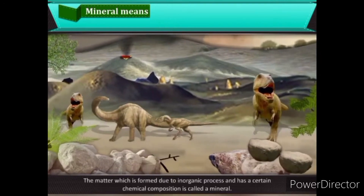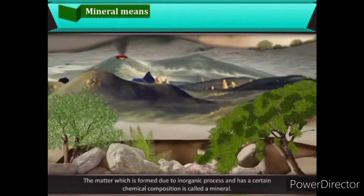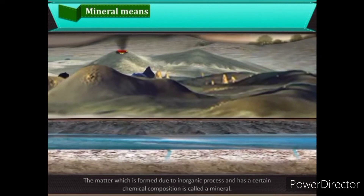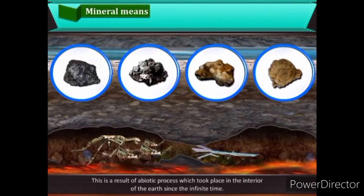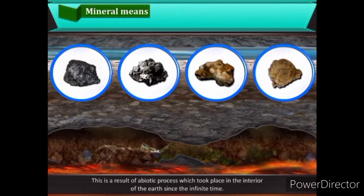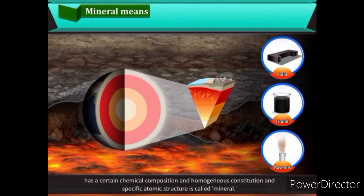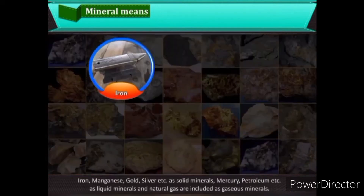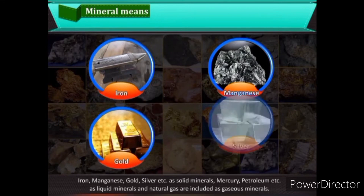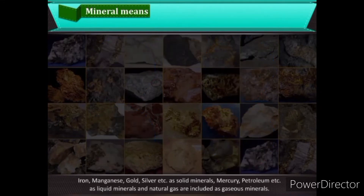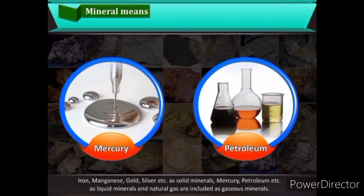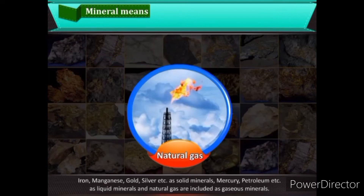A mineral is matter formed due to an inorganic process and has a certain chemical composition. This is a result of an abiotic process that took place in the interior of the earth since infinite time. The solid, liquid, or gaseous matter formed due to a specific abiotic process within rocks, having a certain chemical composition, homogeneous constitution, and specific atomic structure, is called a mineral.